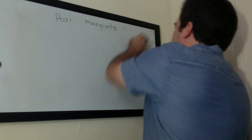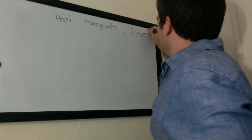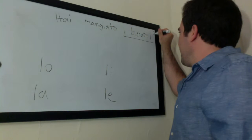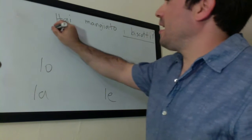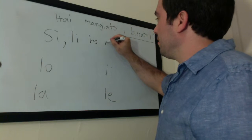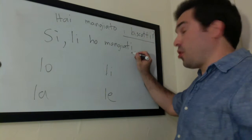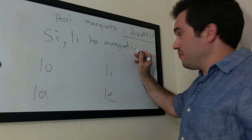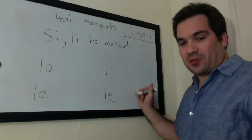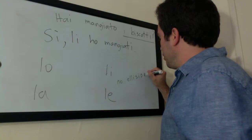How about i biscotti? The pronoun we would use is li. So here I would say: Li ho mangiati. The participle still agrees with biscotti — masculine plural. However, there's no elision with li. In the same case with le — these plurals have no elision, no apostrophe.